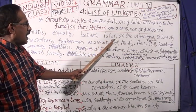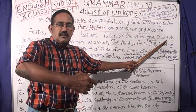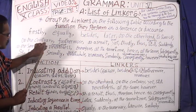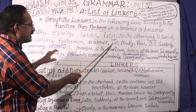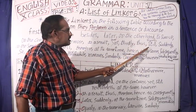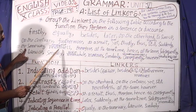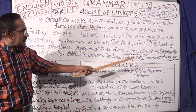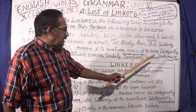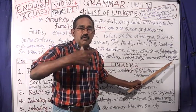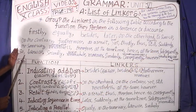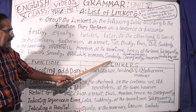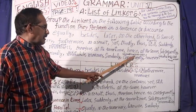Besides, on the other hand, to sum up. After all, on the other hand, however, as a result, after all, thus, in the same way. Therefore, at the same time, hence, all the same, subsequently. Likewise, secondly, meanwhile, and then, similarly, consequently.